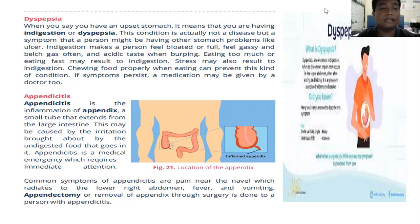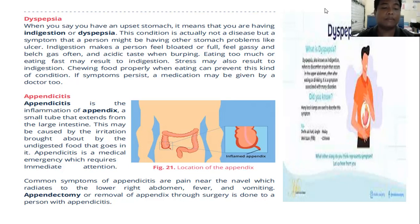Next is appendicitis — the inflammation of the appendix, a small tube that extends from the large intestine. This may be caused by irritation brought about by undigested food that goes into it. Appendicitis is a medical emergency which requires immediate attention from a doctor. Common symptoms are pain near the navel which radiates to the lower right abdomen, fever, and vomiting. Treatment involves appendectomy, or removal of the appendix through surgery.